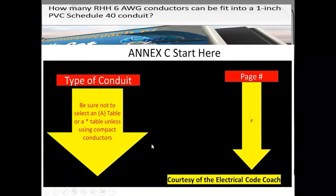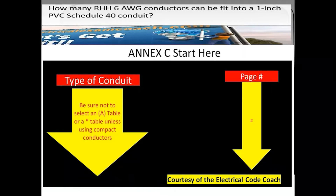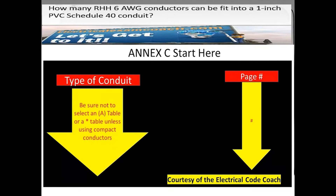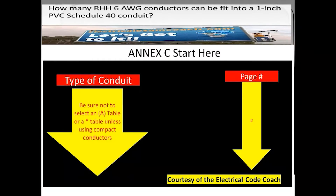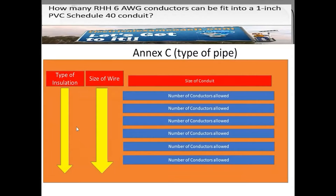We're going to head to our Annex C start-here table, which is at the very beginning of Annex C. We start on the left-hand side and find our type of conduit, come down, and come across the page into the page number column. Then we tee off with our page number and head there. When we get to the page, we start on the left-hand side and find our type of insulation, then come to our wire size, then come across the top to find our conduit size and tee off with the number of conductors that fit into this one-inch piece of schedule 40.